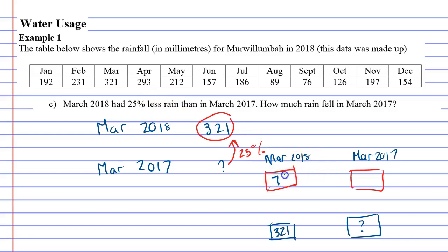We're going to put 75% for March 2018 and 100% for March 2017. Notice wherever the question mark is, that's where the 100% goes. And 25% less than that is 75%. So if we can figure out what we're multiplying by, we can solve this.